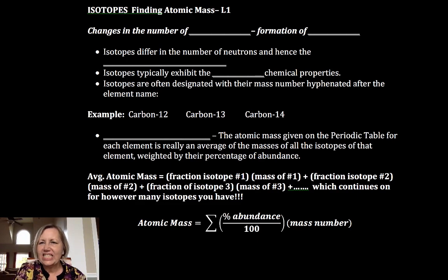Hi, let's talk about isotopes. Isotopes are formed when we change the number of neutrons. That in turn changes the mass number, and we have what are called isotopes.